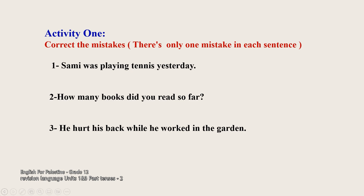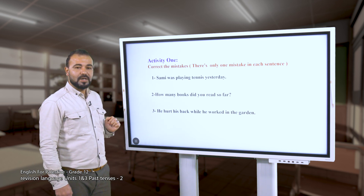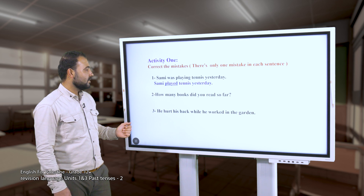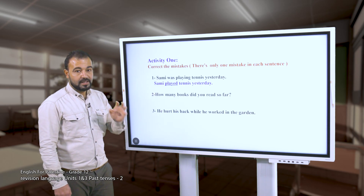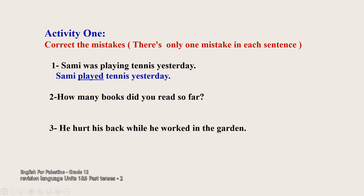Now let's look at activity number one: correct the mistakes - there is only one mistake in each sentence. Sentence one: 'Sammy was playing tennis yesterday.' The mistake is using past continuous - the correct answer is 'Sammy played tennis yesterday,' because it's a completed action in the past and 'yesterday' is a keyword for past simple. Sentence two: 'How many books did you read so far?' The correct answer is 'How many books have you read so far?' which is related to the present perfect tense.